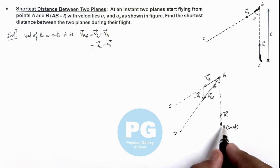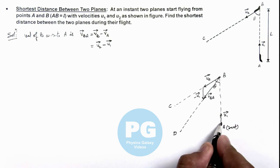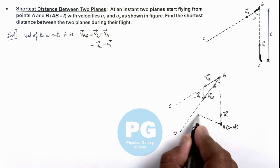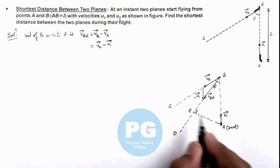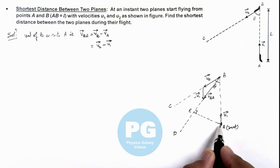In this situation, if we wish to find out the shortest distance between A and B, then we can drop a perpendicular from A to the line of motion of B with respect to it. So if this point is E, here we can say that AE is the shortest distance between the two planes during their flight.